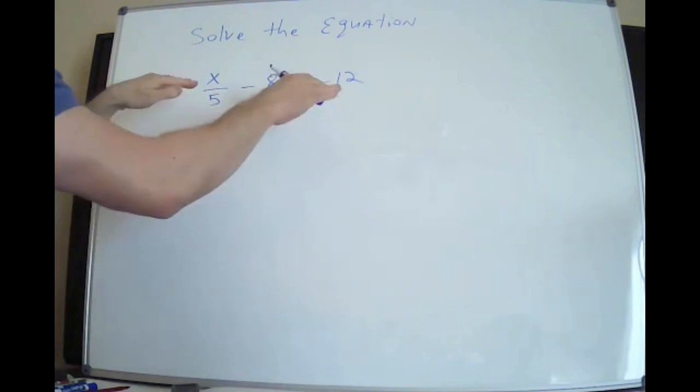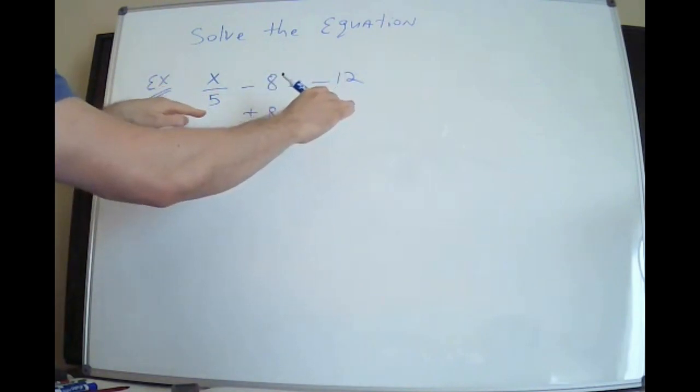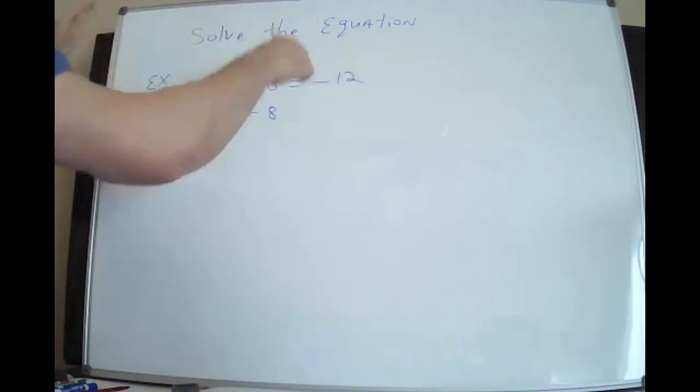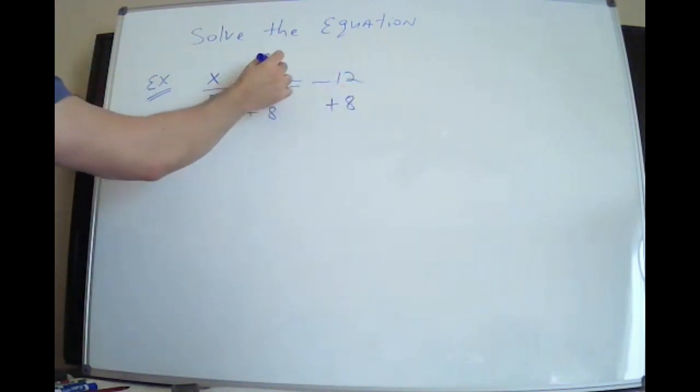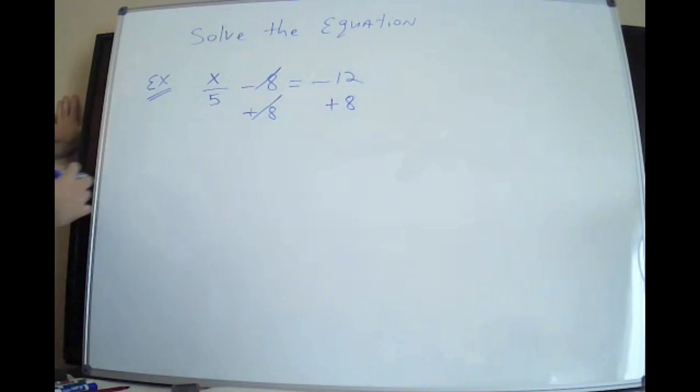But whatever I do, I have a scale. It's balanced. If I add 8 to the left, I have to add 8 to the right, or I have disrupted the balance of my scale. Negative 8 and plus 8 cross out. That's 0. So you're left with x over 5.